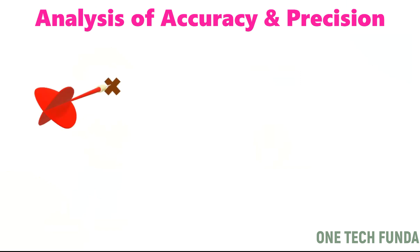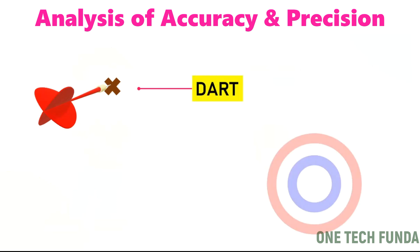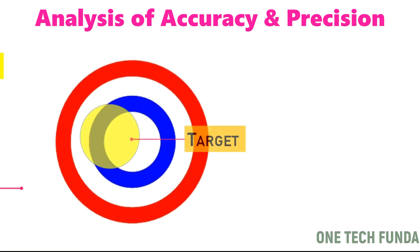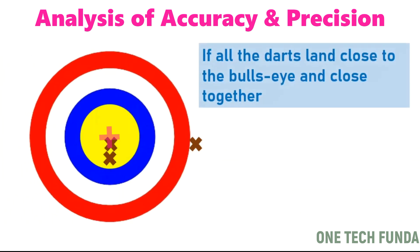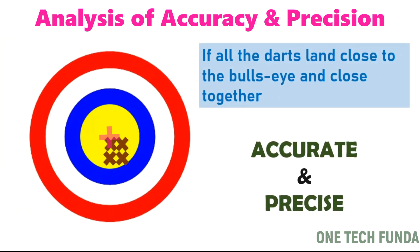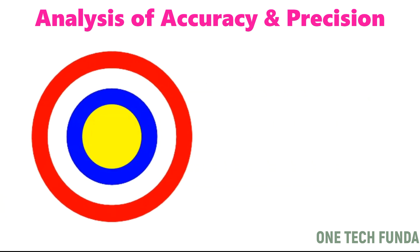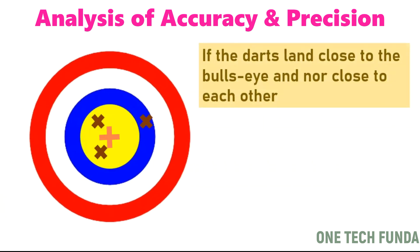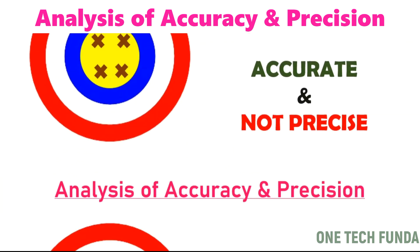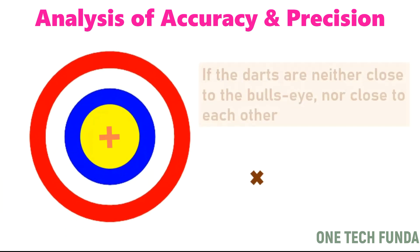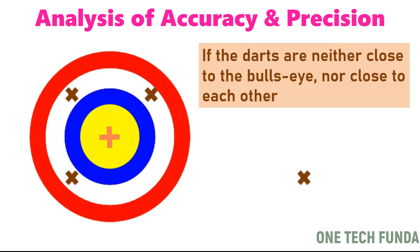Now let's analyze accuracy and precision using darts. If all the darts land close to the bullseye and close together, that means it is accurate and precise. If the darts land close to the bullseye but not close to each other, that means it is accurate but not precise.